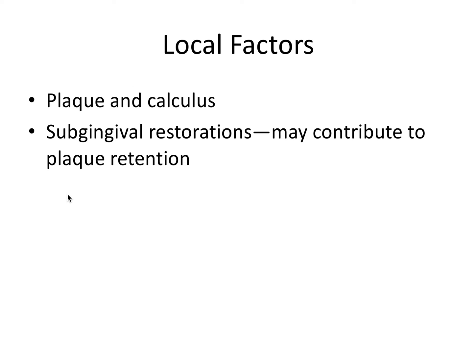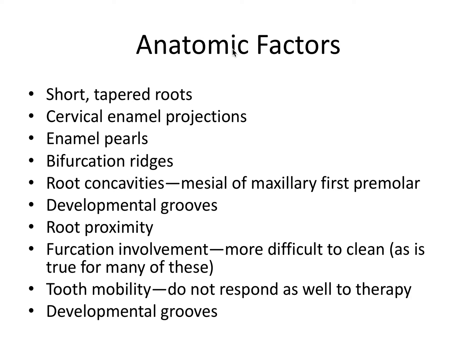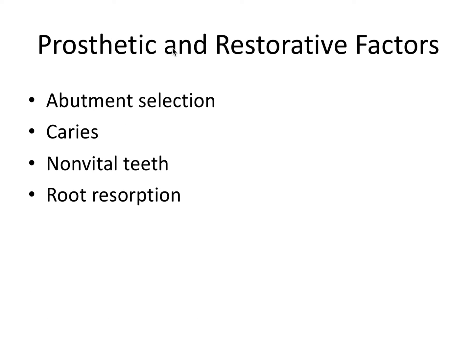For local factors, these have been covered extensively, so moving on to anatomic factors: most of these are features that predispose a tooth to furcation involvement, which severely compromises the patient's ability to keep that area clean, since the furcation area provides a safe haven for plaque bacteria. Plaque bacteria left unattended will worsen prognosis. Tooth mobility is also significant — a mobile tooth will not respond as well to periodontal therapies. Finally, prosthetic and restorative factors, while not directly related to periodontal disease per se, still impact the survivability and prognosis of a tooth.